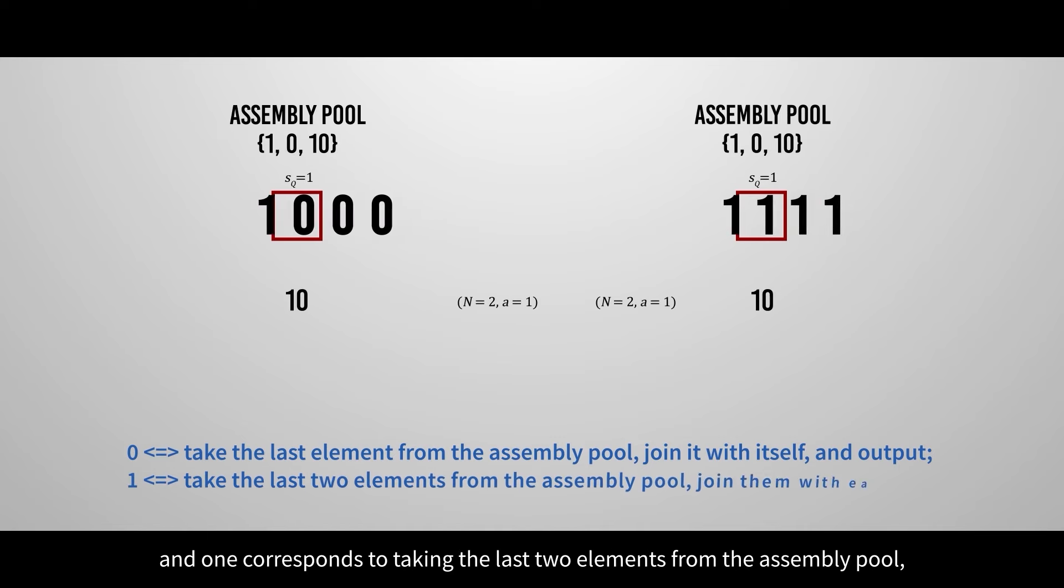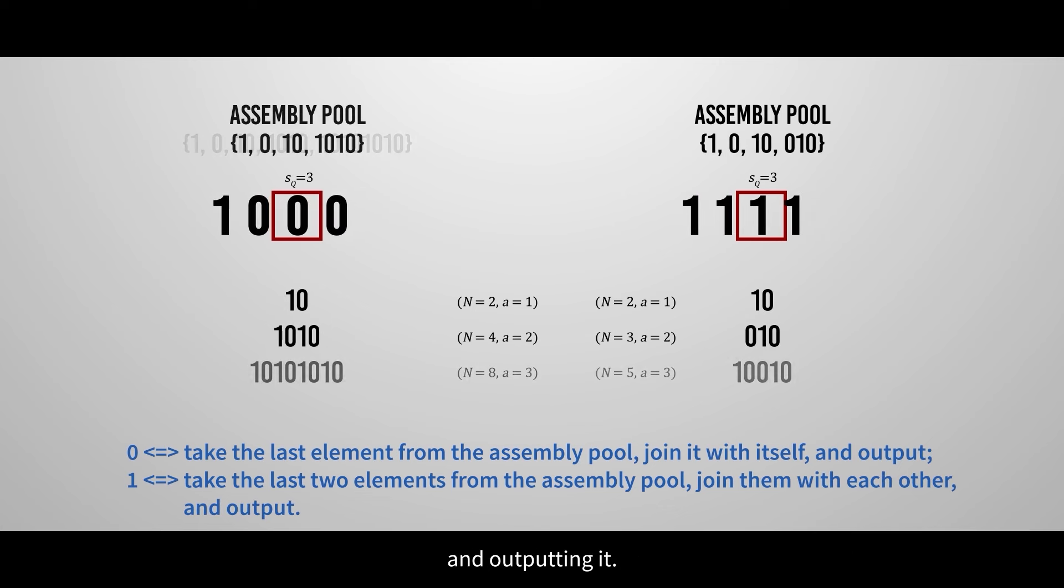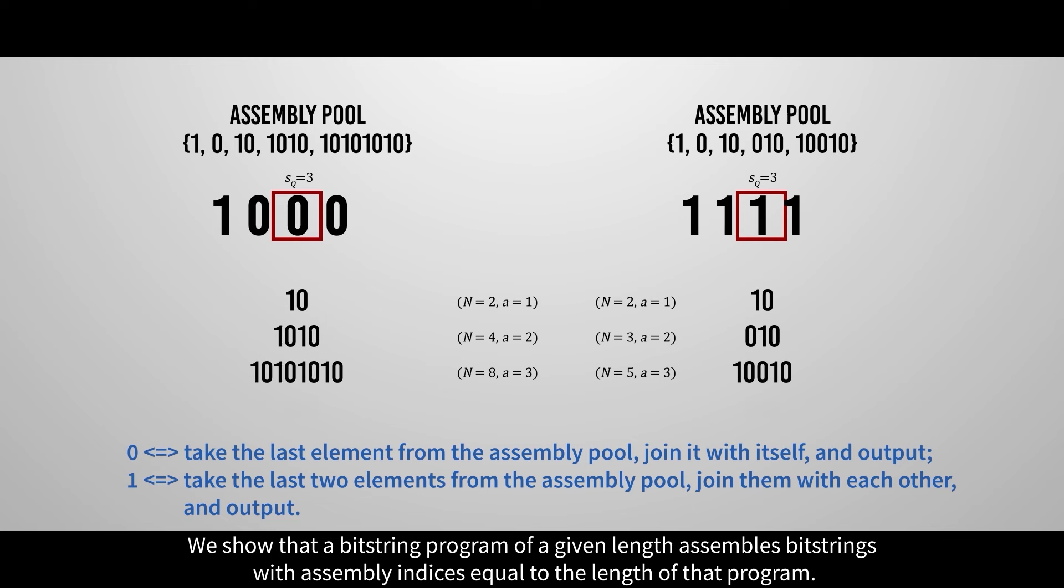And 1 corresponds to taking the last two elements from the assembly pool, joining them with each other, and outputting it. We show that a bitstring program of a given length assembles bitstrings with assembly indices equal to the length of that program.